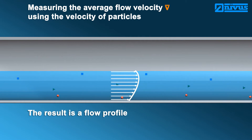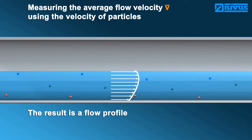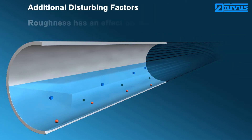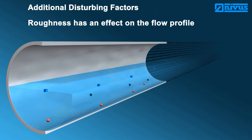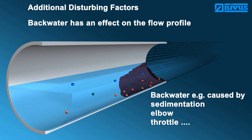This profile depicts the flow velocities related to the levels. Miscellaneous factors affect this flow profile — disturbing free discharge or may result in the formation of backwater. Such disturbing factors may be pipe roughness and varying sedimentation, solid concentration, or influences due to construction such as elbows and throttle equipment.